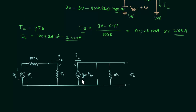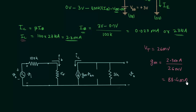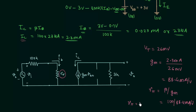First we calculate the transconductance GM. GM equals 2.3 milliamps divided by 26 millivolts, where VT equals 26 millivolts. Solving this gives GM equal to 88.4 milliamperes per volt. Next, RPi equals beta divided by GM, so RPi equals 100 divided by 88.4 milliamps per volt, which gives RPi equal to 1.131 kilo ohms.